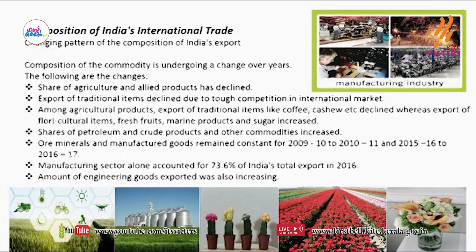India's export of traditional products has declined due to tough competition in the international market. Among agricultural products, the export of traditional items like coffee and cashew declined, whereas the export of floricultural items, fresh fruits, marine products and sugar increased. The share of petroleum and crude products showed a constant increase, and ore minerals and manufactured goods remained constant from 2009 to 2017.